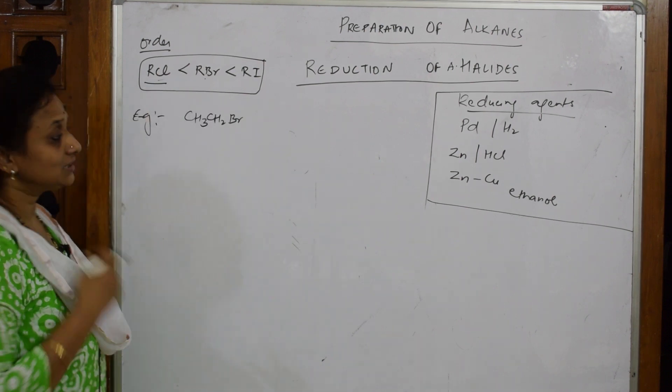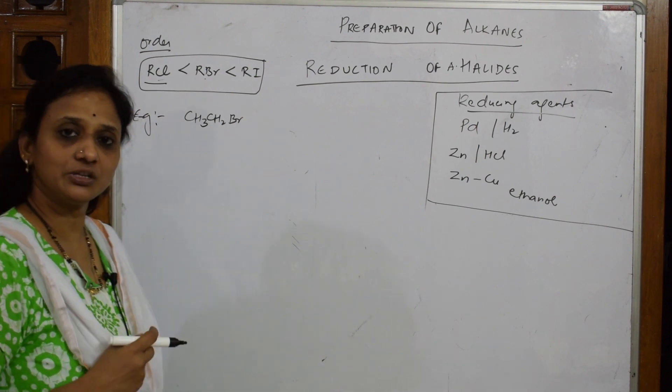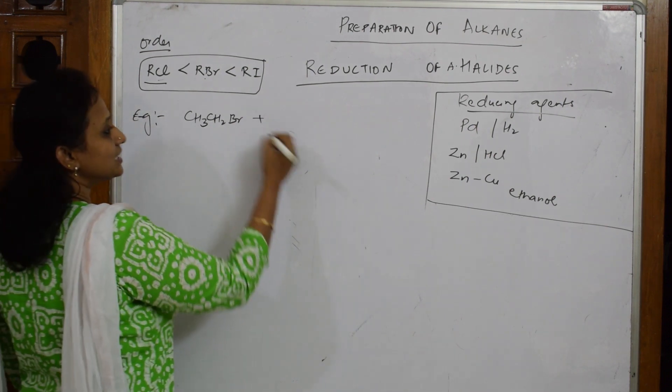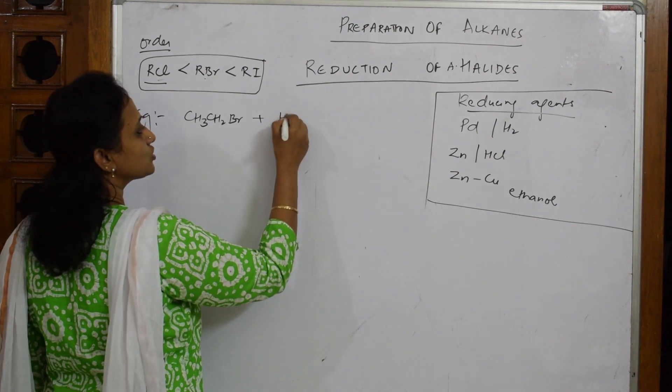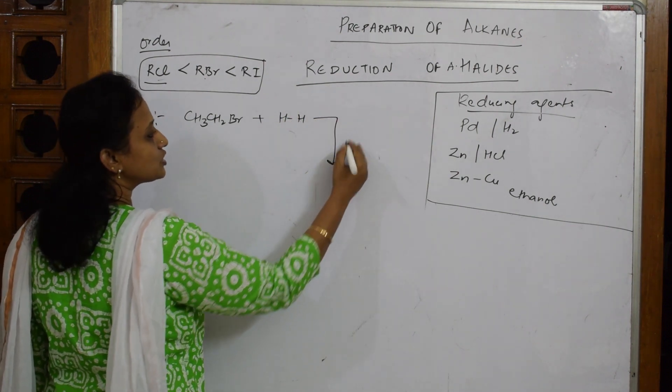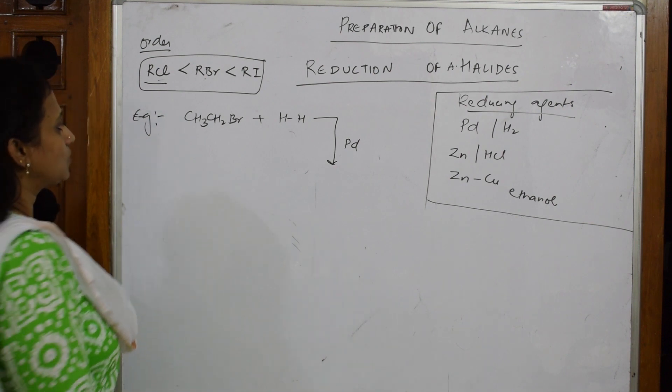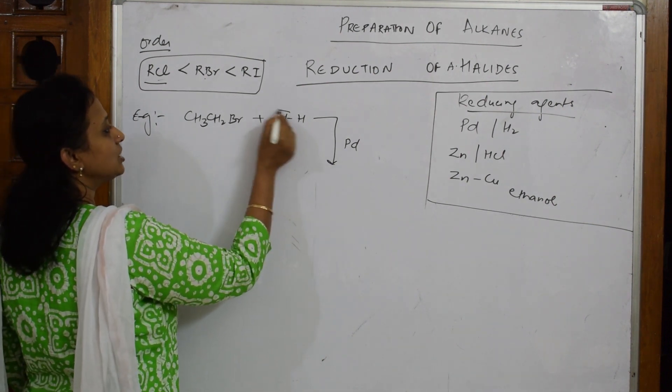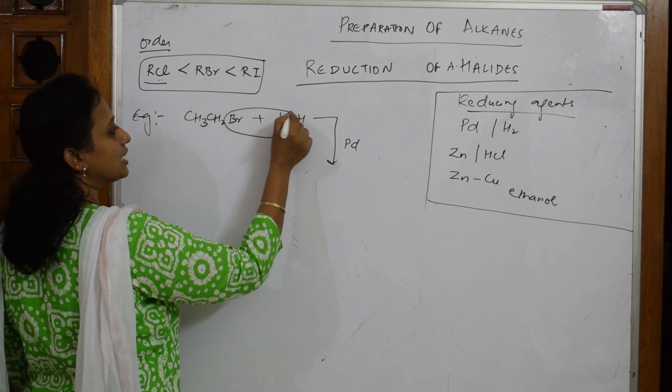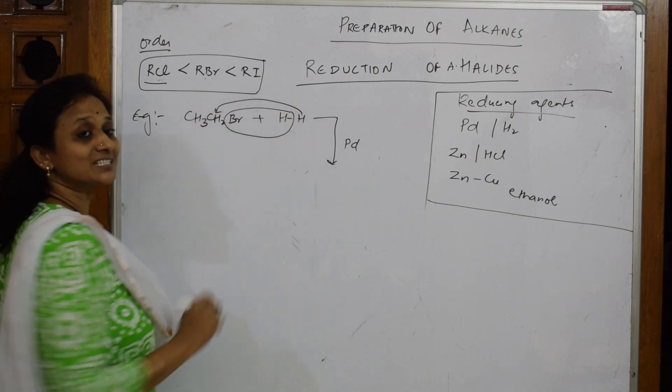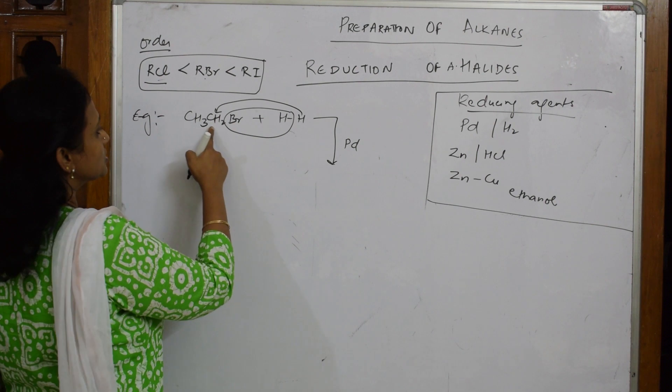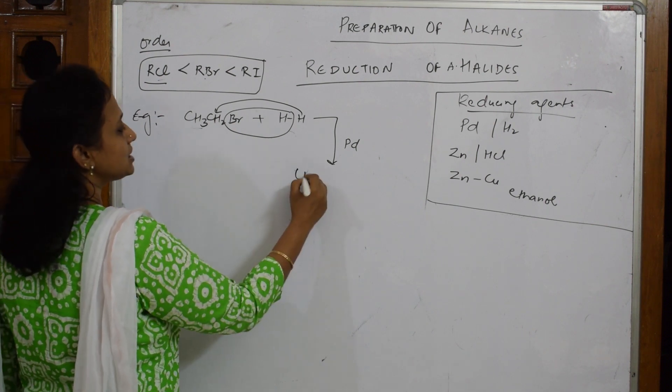This is least reactive, that's the reason I have started with bromine. I said I can use any of these conditions, so I'm adding hydrogen in the presence of Pd as a catalyst - it is a reducing agent. This is a reducing agent - removal of electronegative atom and addition of hydrogen. This is called reduction.